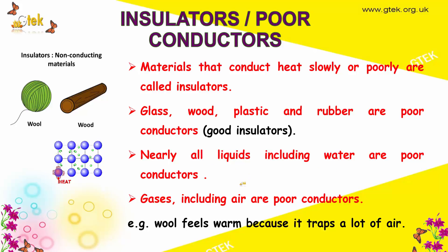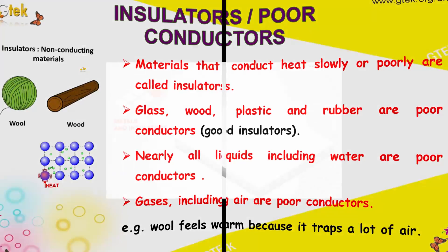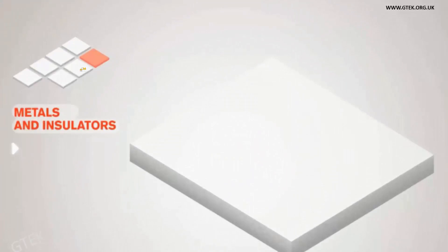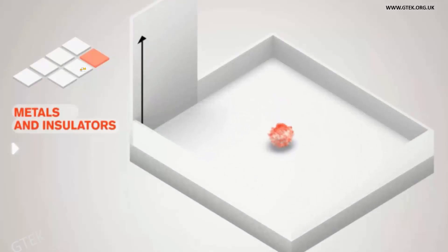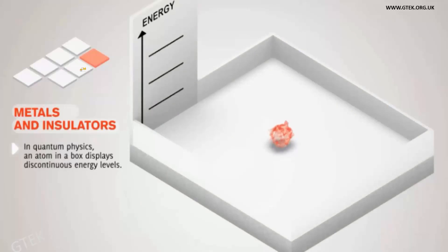Nearly all liquids including water are poor conductors. Gases including air are also poor conductors. An example is wool, which feels warm because it traps a lot of air. So wool and wood are some examples of insulators — insulators are nothing but a non-conducting material.